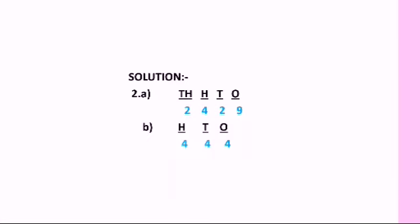For the first one, 2429: the highest place value is 1000, so we write thousands, hundreds, tens, and ones — giving us 2429. For the second one, 444: the highest place value is 100, so we write HTO — hundreds, tens, and ones — giving us 444. So the answer is 444.